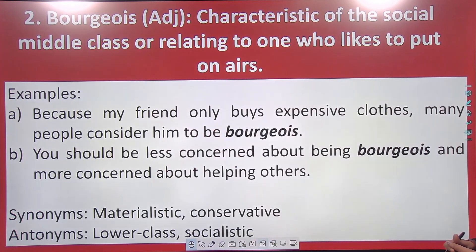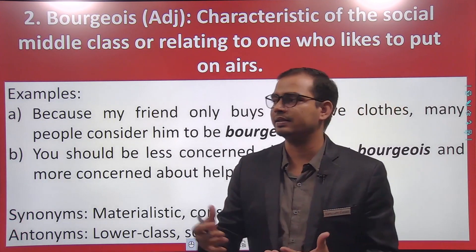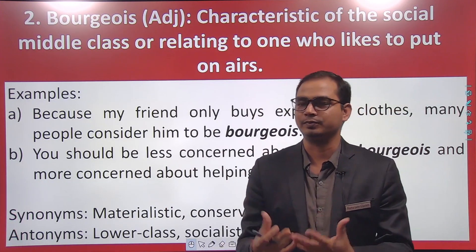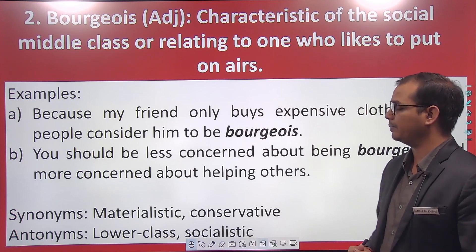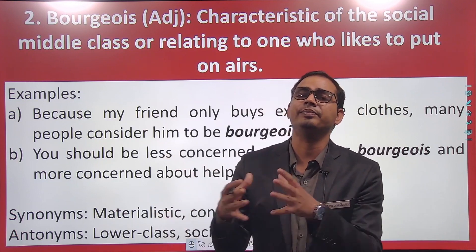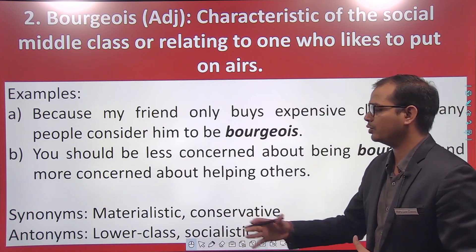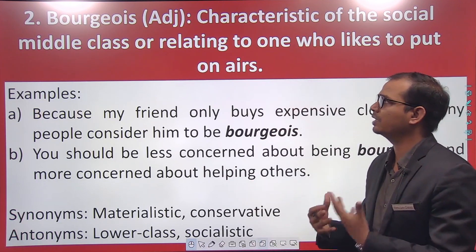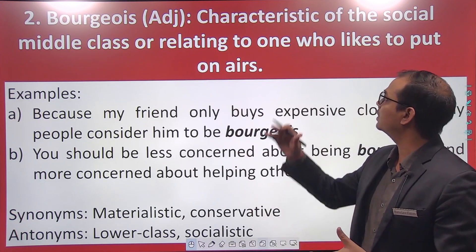They want to show that they are better than others, externally or internally in any way. For example, because my friend only buys expensive clothes, many people consider him to be bourgeois. Another example: you should be less concerned about being bourgeois and more concerned about helping others — a suggestion to be less showy and focus on social work. Synonyms are 'materialistic' and 'conservative'; antonyms are 'lower class' and 'socialistic.'